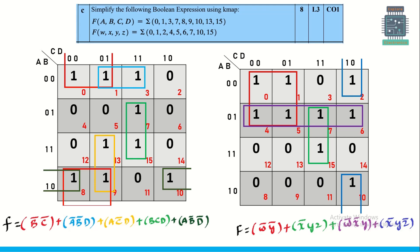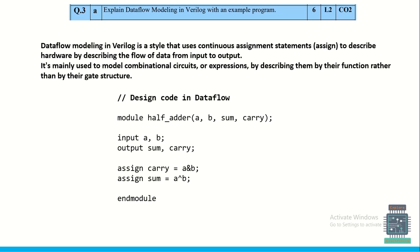The next question asks to explain data flow modeling in Verilog with an example program. Data flow modeling is a style of writing Verilog code that uses continuous assignment statements — using the 'assign' keyword, we write the expression with operators. Data flow description is generally used for designing combinational circuits, not sequential circuits. Write any example program such as a half adder or full adder in data flow style.